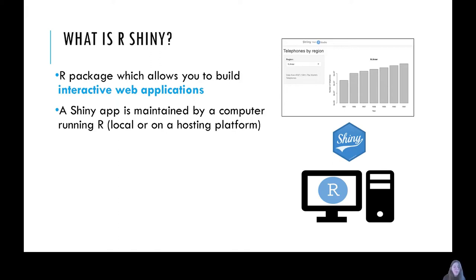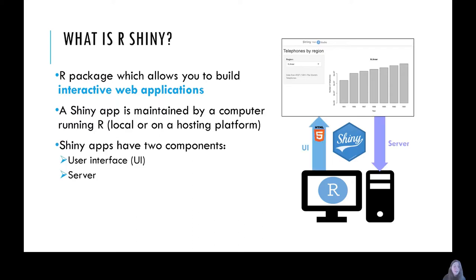The benefit of using a hosting platform is that your application can be shared with anyone as long as they have an internet connection and can access that website. Shiny apps have two main components: they have a user interface, which is what you see when you go onto the application and what the user interacts with, and they also have a server, which is instructions for what the computer should do in the background — the processing side of things. When a user inputs something within the user interface, it gets processed in the server and usually leads to some sort of change in the output on the application.